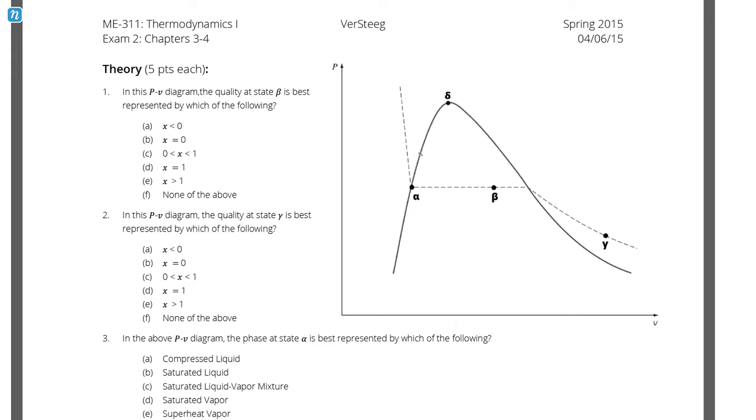Question number one. In this PV diagram, the quality at state beta is best represented by which of the following? This question, and actually the first three questions, are all referring to quality. Remember that quality is a property that is used to describe a saturated mixture, and it represents the ratio of the mass of the vapor in the mixture. So if you had a saturated liquid vapor mixture, and 25% of it was vapor, 75% was liquid, then you would have a quality of 0.25.